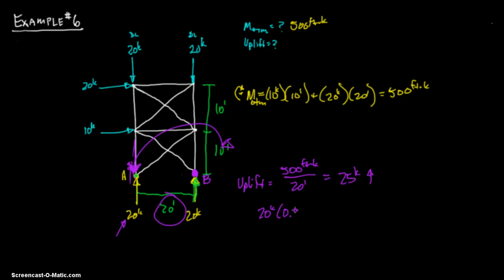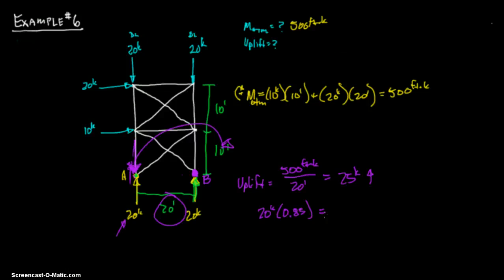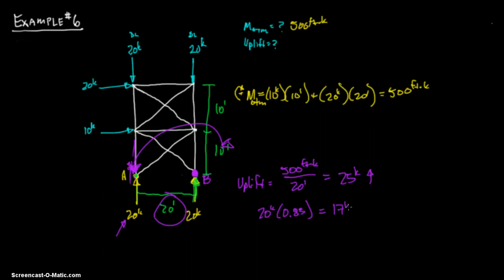and we have a dead load of 20 kips times 0.85, and that's just by code, and it should be in the UBC. Once again, I do not have a UBC with me, since it's about 10 years old, and I will not be able to find it, so that's 17 kips. So, you have 17 kips down from your dead load. So, let's subtract these out, 25 minus 17, and you get 8 kips uplift.